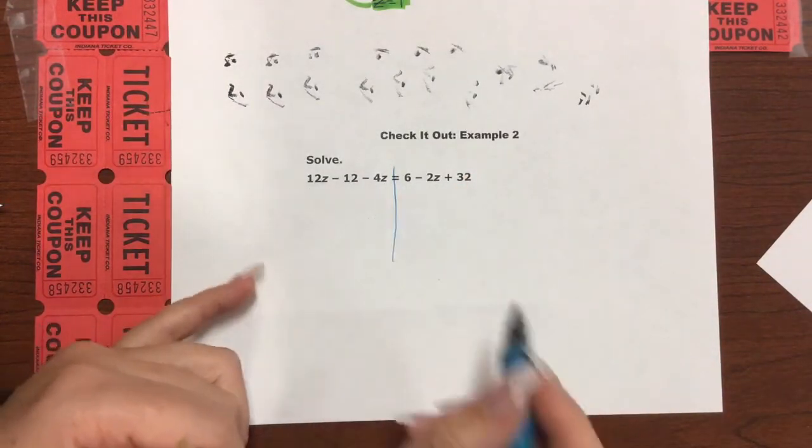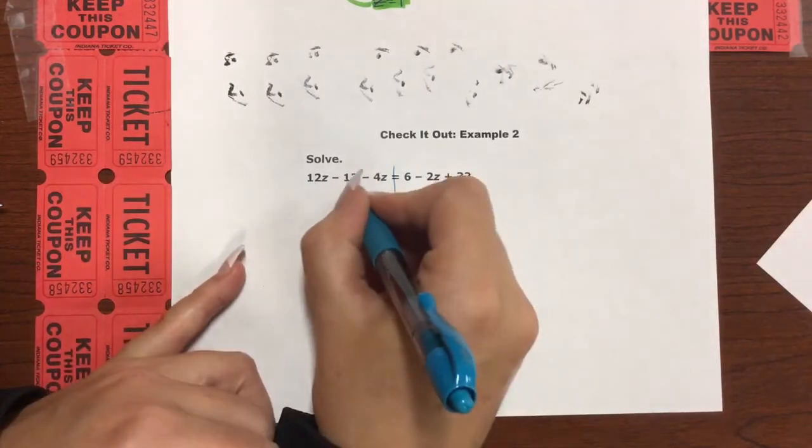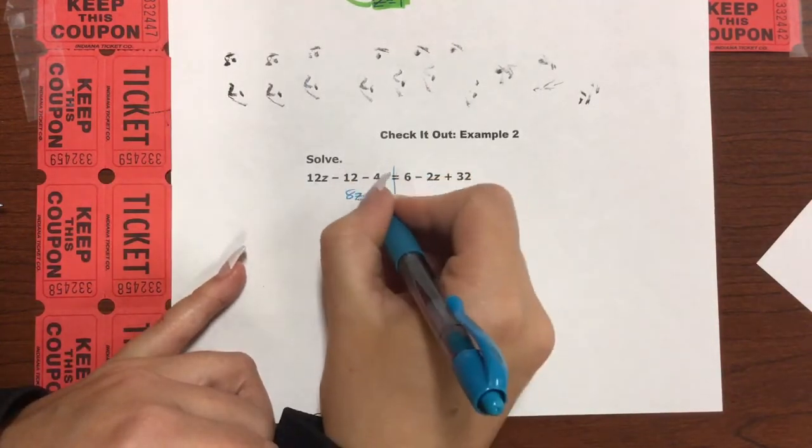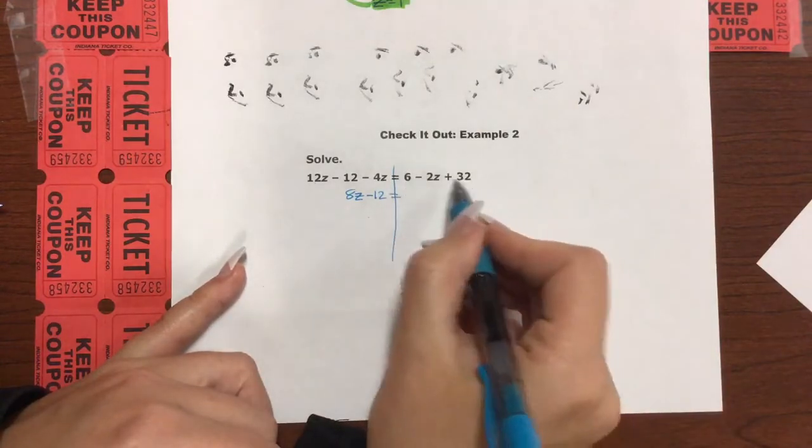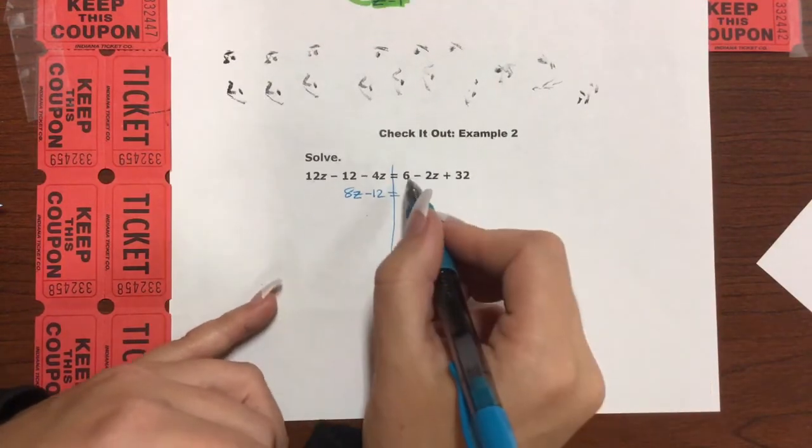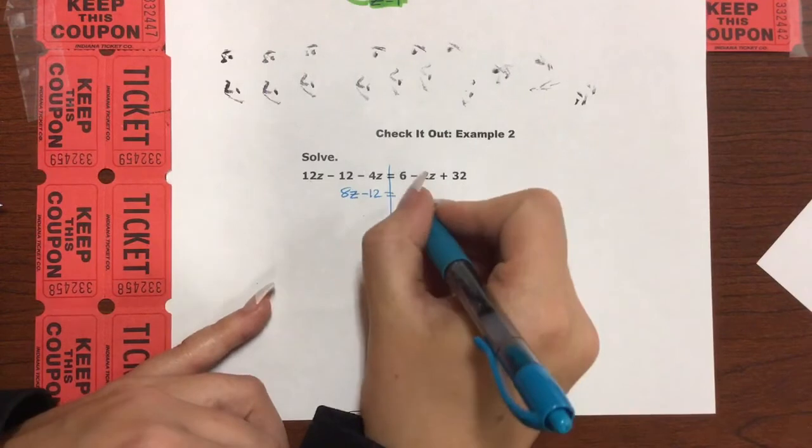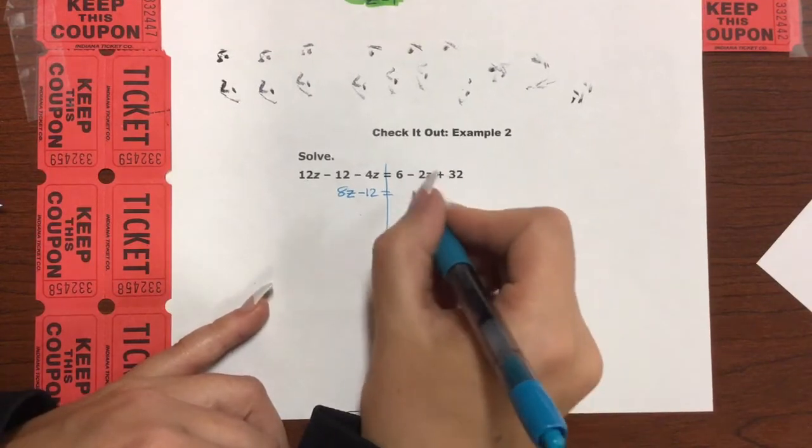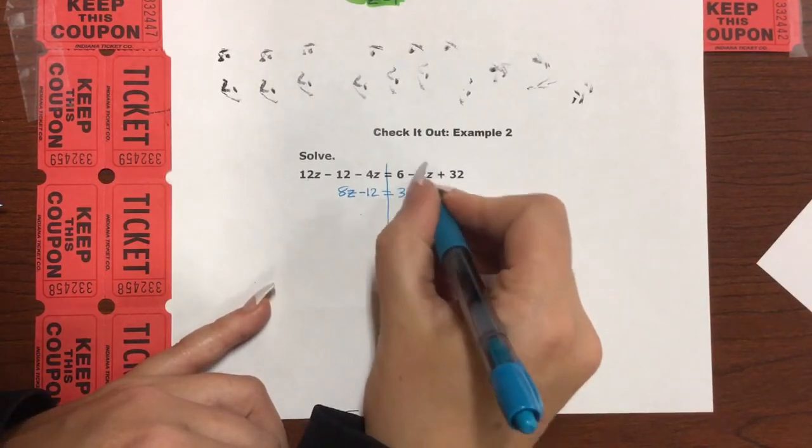I have 12z and negative 4z over here. That is 8z minus 12. And then I have these constants I need to combine over here on this side. 6 plus 32 would be 38. Yes, it is. 38 minus 2z.